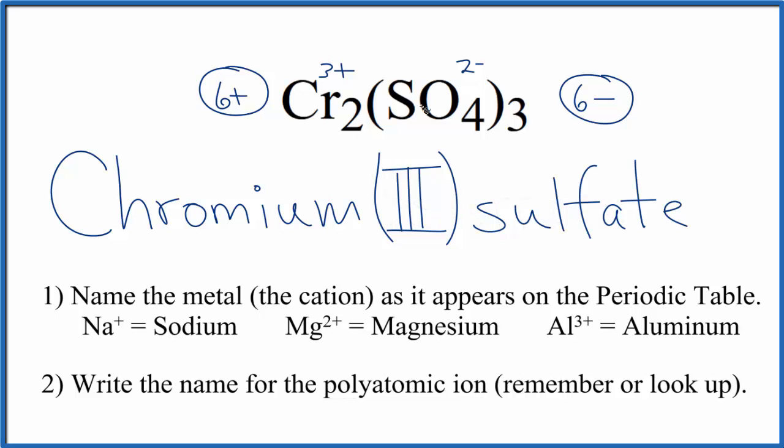So the name for Cr₂(SO₄)₃ is chromium (III) sulfate, and the three comes from up here on the chromium, each chromium. This is Dr. B, and thanks for watching.